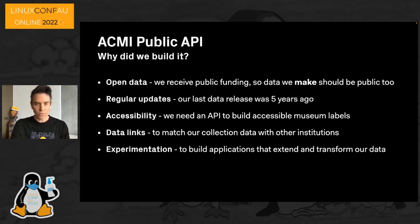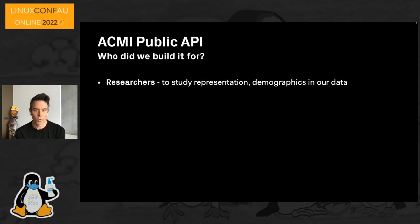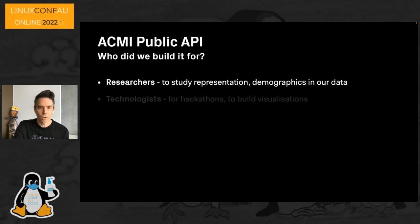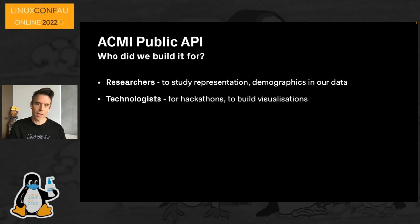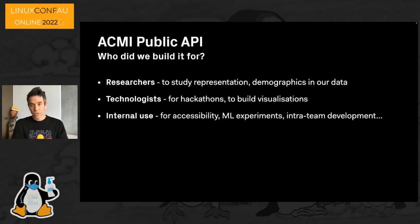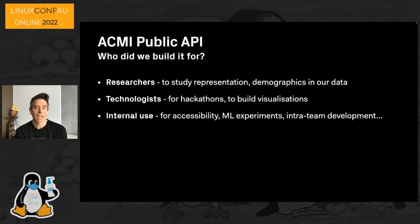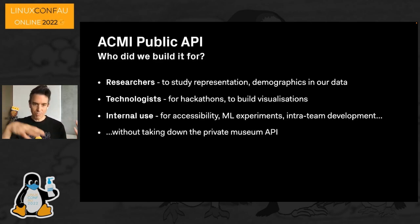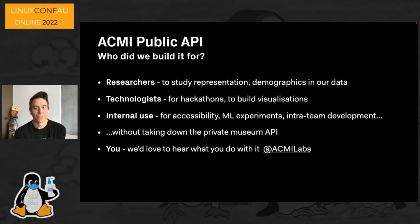Before we built it we needed to answer who we were really building it for. Primarily we're building it for researchers who might use it to study representation and demographics in our data. We also built it for technologists — envisaging them using it in hackathons and to build visualizations. We also need it for internal use. We've got three technical teams at ACMI — audio visual, information technology, and the experience and digital team I belong to — all with creative people who love writing code. The public API lets us develop applications with our collection data without the fear of bringing down the private museum API.